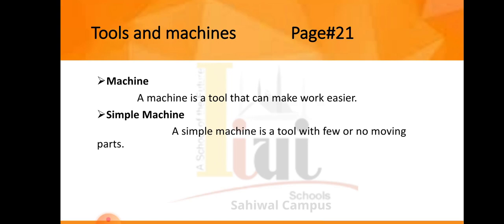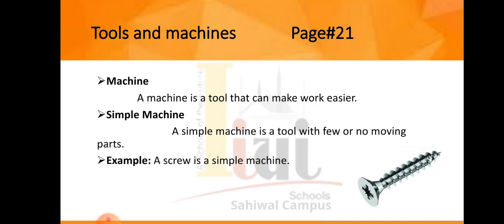The next point is Simple Machine. A simple machine is a tool with few or no moving parts. An example of a simple machine is a screw. A screw is a simple machine that holds things together.